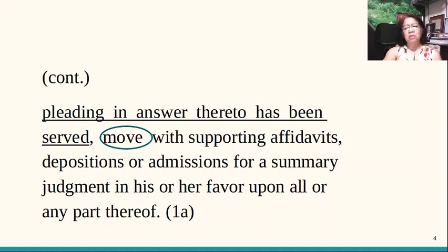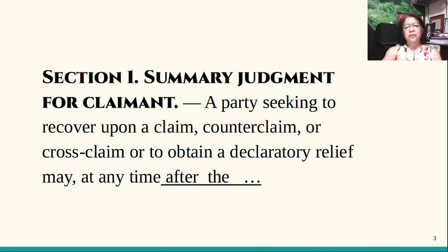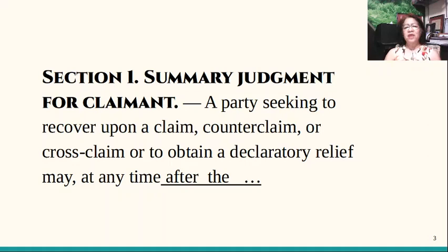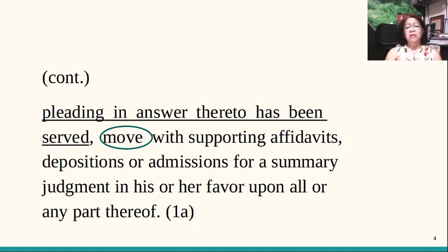For the claimant, he can only file a motion for summary judgment after the responsive pleading has been served — not merely filed, but served. Let's examine the first part of that provision. It says 'a party seeking to recover upon a claim' — that's the plaintiff. A party seeking to recover upon a counterclaim or crossclaim — that's the defendant. So a defendant may move for summary judgment as a claimant under Section 1 if he is moving with respect to his counterclaim or crossclaim. And declaratory relief is for the petitioner in a petition for declaratory relief. That's why I underlined the phrase 'after the pleading in answer thereof has been served.'